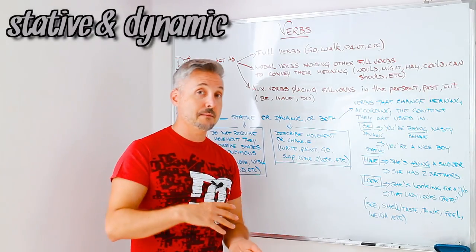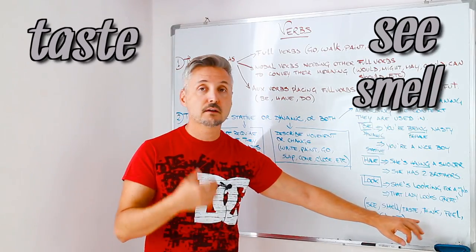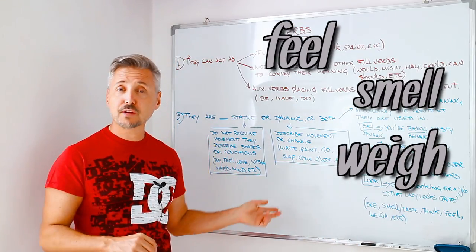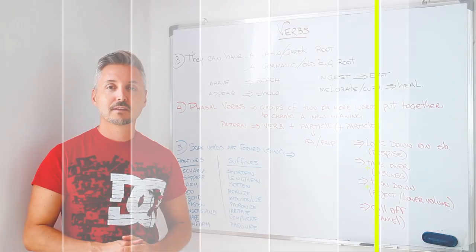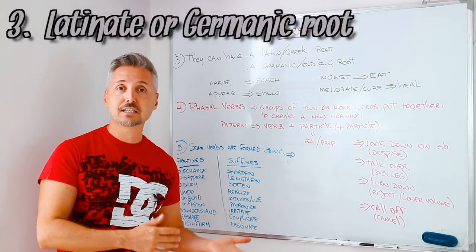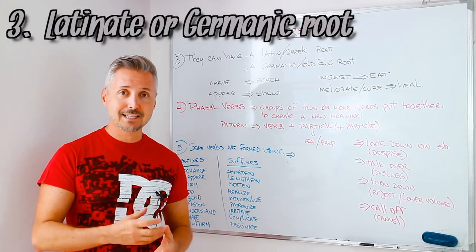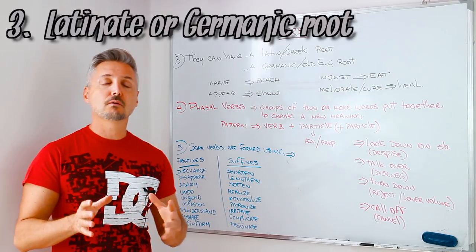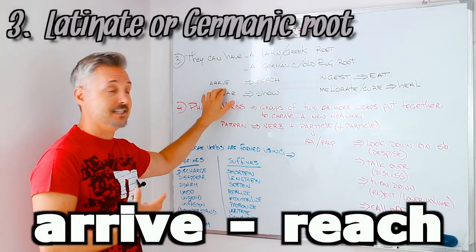Other verbs that can be dynamic and stative are see, smell, taste, think, feel, weigh, measure, etc. I'm going to erase this, and I'm going to look at other points of verbs. So, by now, you should know that verbs, like words in English, can have a Latinate or Greek root or Germanic root. The ones that are, or have a Latinate or Greek root are considered more sophisticated.